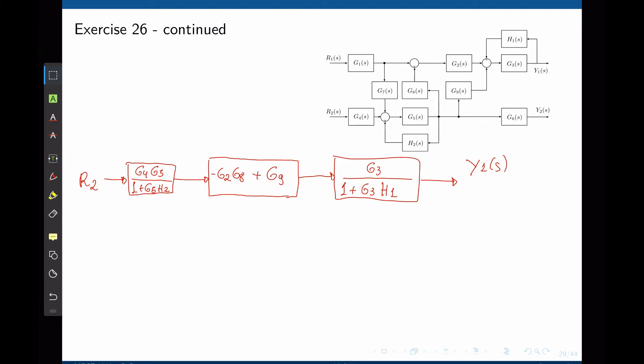Now our job is very simple. We can simply multiply all these three blocks together to find the final transfer function. So this becomes R2 times G3, G4, G5, times negative G2 G8 plus G9, all divided by 1 plus G5 H2, times 1 plus G3 H1.